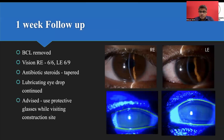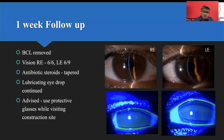At one week, the bandage contact lens was removed. His ocular surface became healthy. The cornea was free from punctate epithelial erosions in the right eye, though a few remained in the left eye. His vision was 6/9 in the left eye at that time. The antibiotic-steroid combination was tapered and lubricating eye drops were continued for a further 4 weeks. He was advised to use protective glasses while visiting construction sites in future.